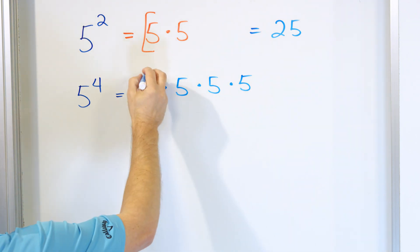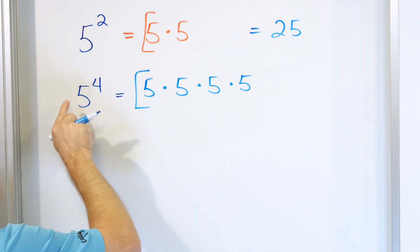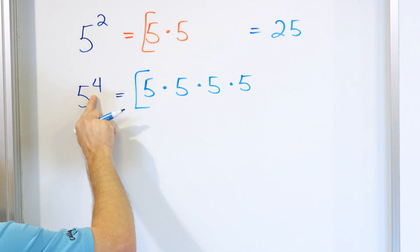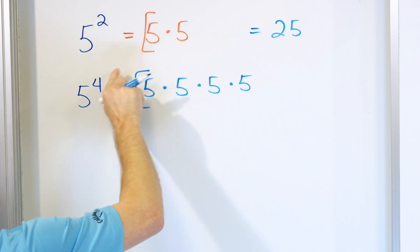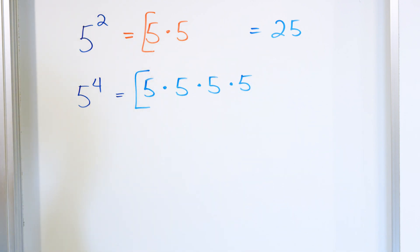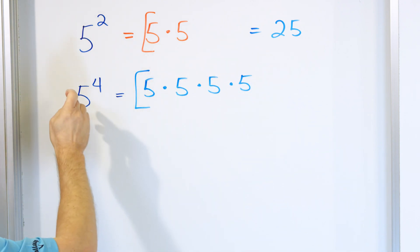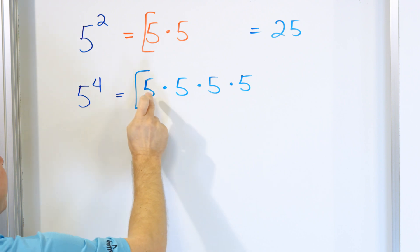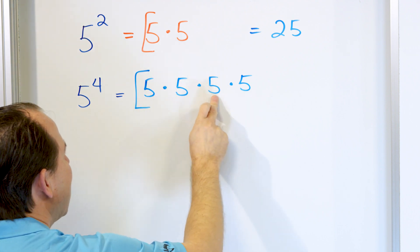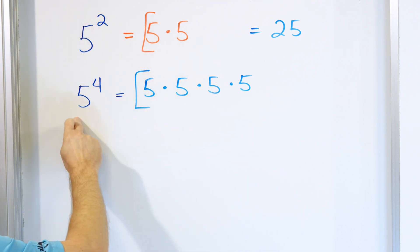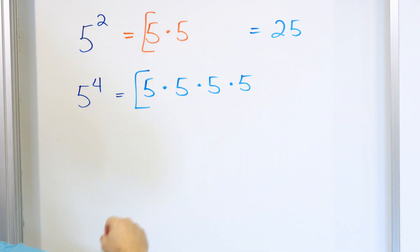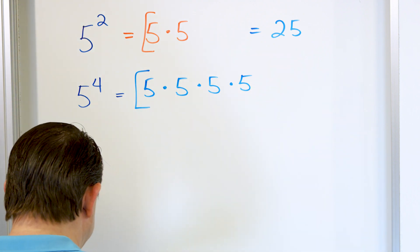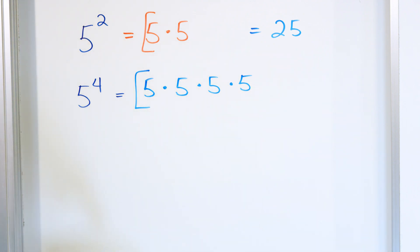Writing as a product of factors is the final answer to this whole string of multiplications. If you have five to the power of three, it's just five times five times five. If you have five to the power of seven, then you'll have seven fives each multiplied together.